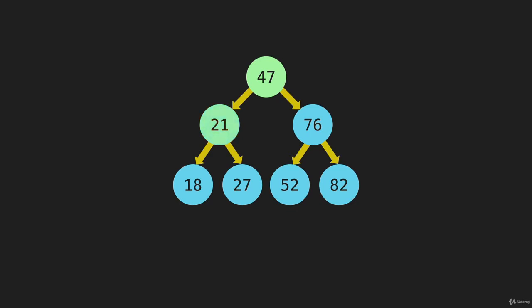We're going to go left to the 21, visit that node, then go left to the 18, and visit that node. The 18 is going to try to go left — there's not an item there — then try to go right — there's not an item there. Finally, the 18 will write its value to the array. That'll be the first item in the array.